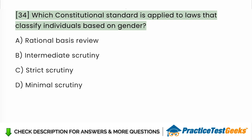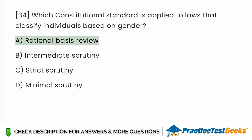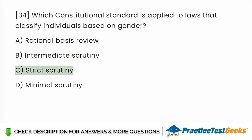Which constitutional standard is applied to laws that classify individuals based on gender? a. Rational Basis Review. b. Intermediate Scrutiny. c. Strict Scrutiny. d. Minimal Scrutiny.